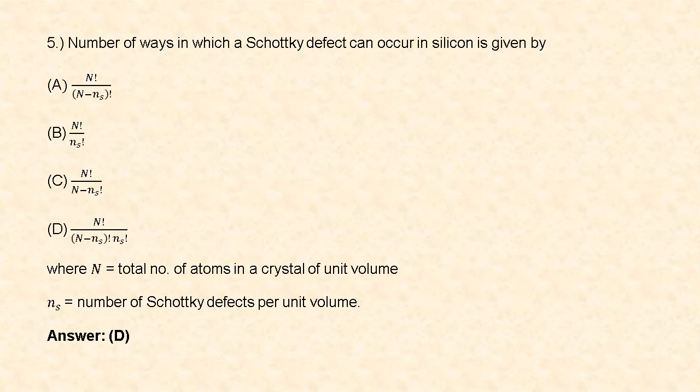Next question: the number of ways in which a Schottky defect can occur in silicon is given by the formula n! / ((n − n_s)! · n_s!), where n is the total number of atoms in a crystal of unit volume and n_s is the number of Schottky defects per unit volume. So option D is correct.